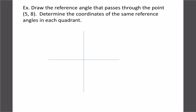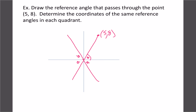We can also do this with coordinates instead of angles. The point (5, 8) gives a reference angle that's the same in all quadrants. The easiest way is to just change the signs of the coordinates: (5, 8), (-5, 8), (-5, -8), and (5, -8) all produce the same reference angle, because the tangent ratio would always be 8 over 5. The negative signs just indicate which quadrant we're in.